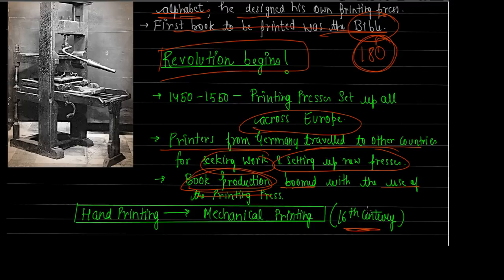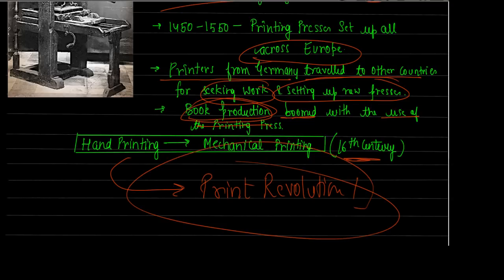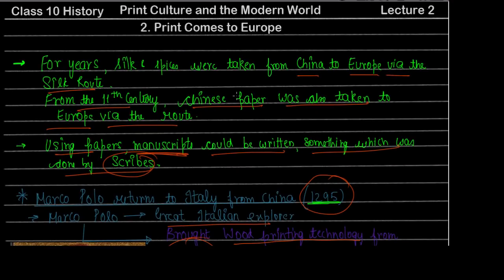By the sixteenth century, printing press use had spread so much that the transition from hand printing to mechanical printing was almost complete. This transition represented the beginning of the print revolution. We will see the beginning of the print revolution in the next lecture of this chapter. Thank you very much for joining me.